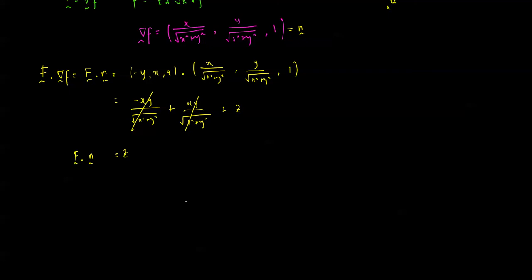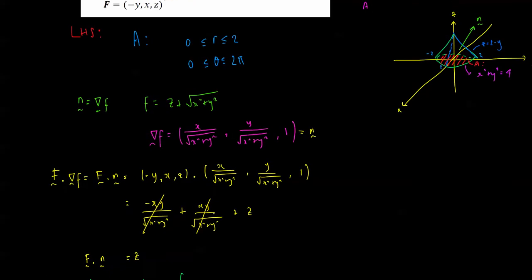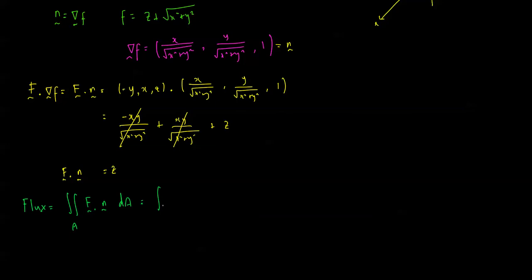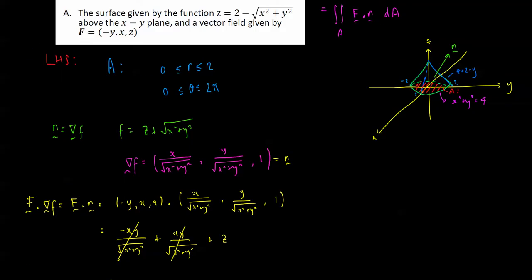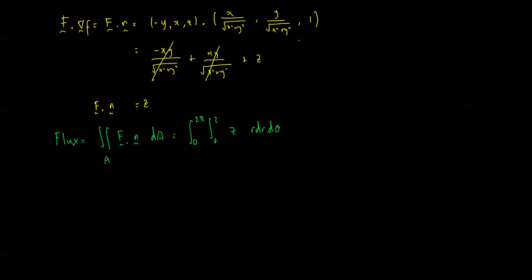Now we're ready to find the flux. The flux equals the integral over region A of F·n dA, which becomes the double integral from 0 to 2π, 0 to 2, of z times r dr dθ — don't forget the Jacobian r. Here z is given by the surface equation: 2 minus the square root of x squared plus y squared. So the integral becomes the integral from 0 to 2π, 0 to 2, of (2 minus √(x²+y²)) times r dr dθ.